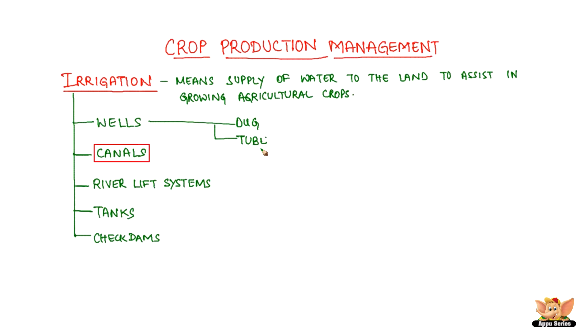Canals receive water from one or more reservoirs or from rivers, and the main canal is branched for further distribution of irrigation. River lift systems are systems where water is directly drawn from rivers.